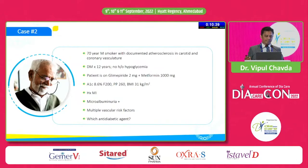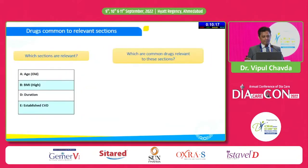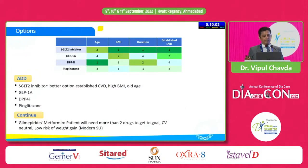Case 2: a 70-year-old smoker with documented atherosclerosis in carotid and coronary arteries, 12 years of diabetes, no history of hypoglycemia, on glimepiride 2mg with metformin 1g, A1C 8.6, BMI 31, history of MI, microalbuminuria, and multiple vascular risk factors. Key factors: old age, established ASCVD, long duration, high BMI. Options from the RSSDI Therapeutic Wheel include SGLT2 inhibitor, GLP-1 RA, DPP4 inhibitor, and pioglitazone. We can add an SGLT2 inhibitor — best option for established CVD, high BMI, and older age. If affordable, add GLP-1 RA (oral or injectable). DPP4 is one of the safest molecules for older age; pioglitazone is appropriate for high insulin resistance. Continue glimepiride and metformin, focusing on CV-safe medicines.